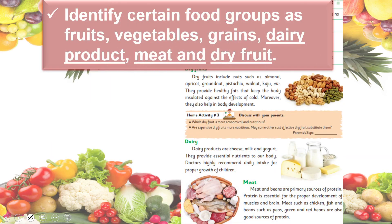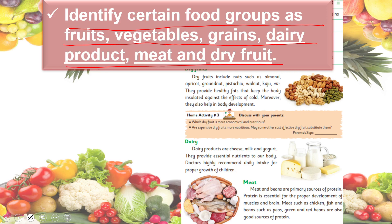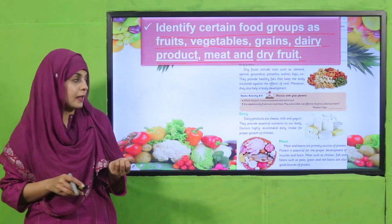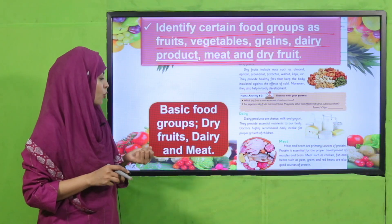In the next lecture, students were able to identify certain food groups: fruits and vegetables, grains, dairy products, meat, and dry foods. We learned about dairy products, meat, and dry foods as food groups. There are five major food groups, which are very important and provide different types of nutrition. The basic food groups are dry fruits, dairy, and meat.